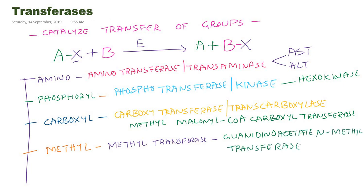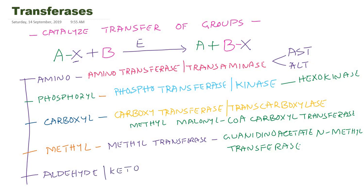Many other groups are also involved in Transferase reactions — for example, an aldehyde group or a keto group. In such cases, the enzymes are called transaldolase or transketolase. We can see these enzymes in the HMP shunt pathway.